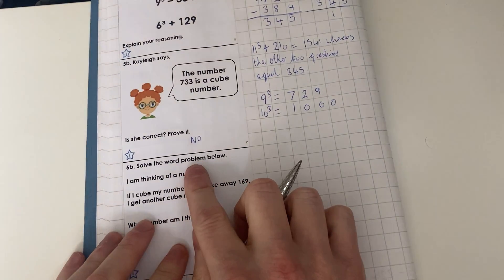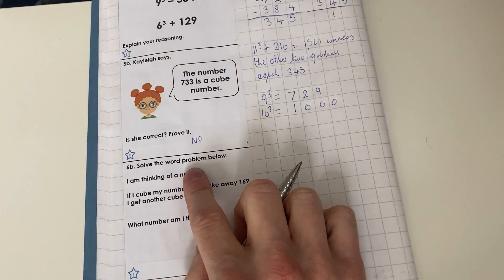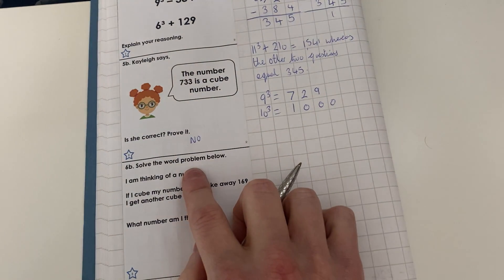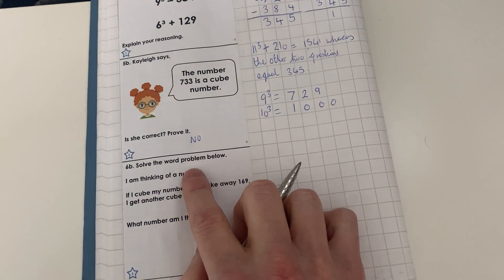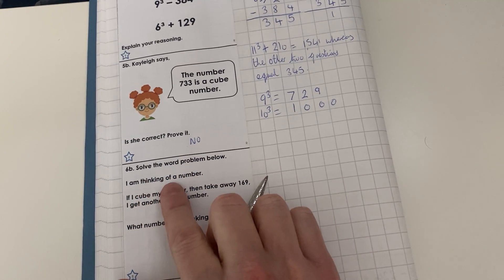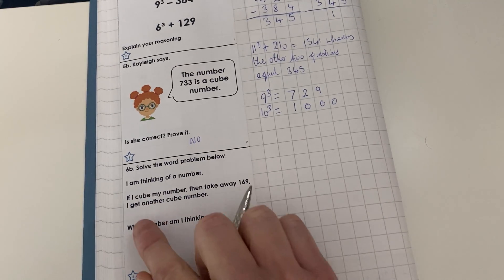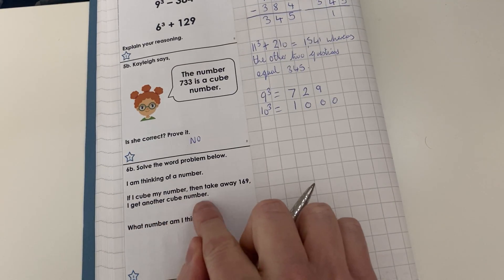And here we go, the last one. I really enjoy these sort of questions because they make you think outside the box and really understand the question. Solve the word problem below. I am thinking of a number. If I cube my number then take away 169, I get another cube number. What number am I thinking of?